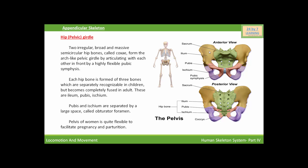Each coxal bone is made up of three bones — the upper broad portion is called the ilium, and the two lower bones are called the pubis and ischium. The ilium, pubis, and ischium fuse together to form the coxal bone, and two coxal bones fuse together at the pubic symphysis to form the pelvic girdle. The point at which these three bones meet, a cup-shaped hollow structure is formed called the acetabulum. The femur articulates with the acetabulum of the pelvic girdle. So this is all about the hind limb and pelvic girdle. Thank you.